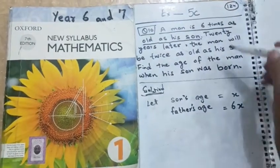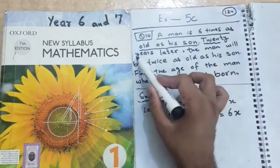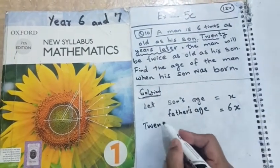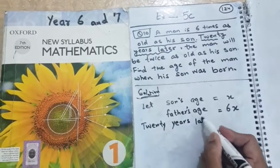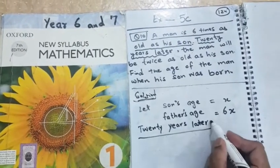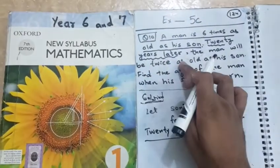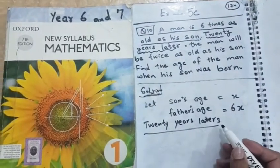Then read the rest of the statements now. 20 years later. 20 years later. What happened 20 years later? 20 years later. Now the story begins after 20 years. What will happen 20 years on their ages? The man will be twice as old as his son.